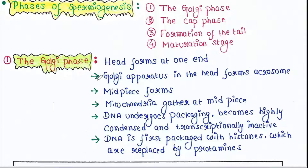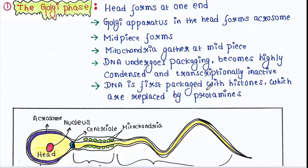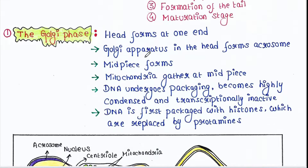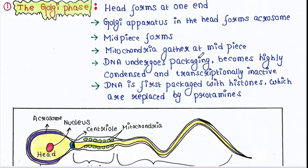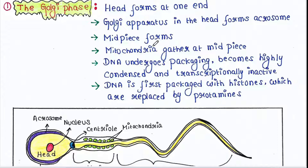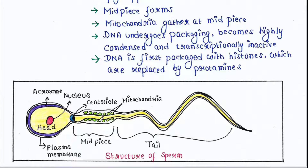The first stage is the Golgi phase. In this phase, the head forms at one end. The Golgi apparatus in the head forms the acrosome. The midpiece forms, and mitochondria gather at the midpiece. DNA undergoes packaging, becomes highly condensed and transcriptionally inactive. DNA is first packaged with histones, which are replaced by protamines.